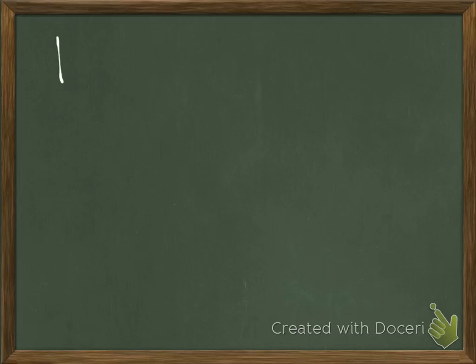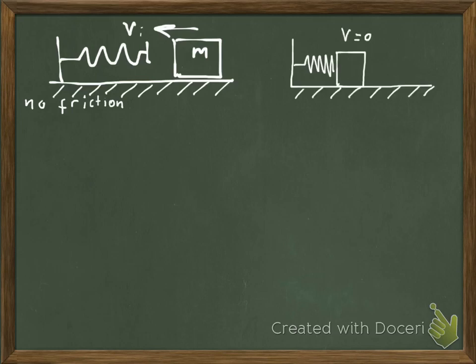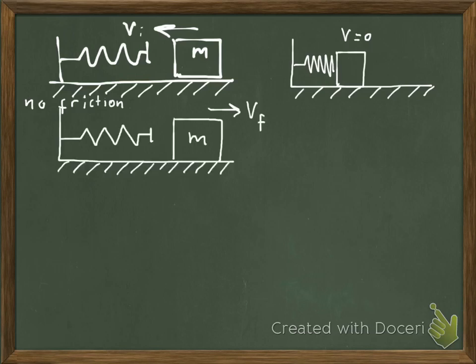In this video we consider elastic collisions. Let's look at the following scenario: a spring is attached to a wall, there is a floor with no friction, and a block of mass m moves on this floor with velocity v-initial, hits the spring, gets maximally compressed, then the spring pushes the block in the opposite direction. Eventually the block comes back and the spring is no longer compressed, with the block moving at velocity v-final.